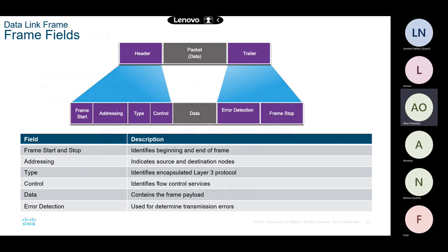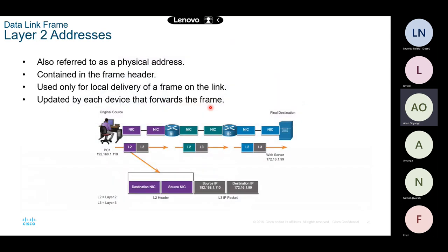The data link layer uses layer two frames. The MAC address — a layer two address — is also called the physical address because it comes with the device from the manufacturer and you cannot separate the two. Another name for this MAC address is the burned-in address — it's burned in there — and it is normally found within the frame.